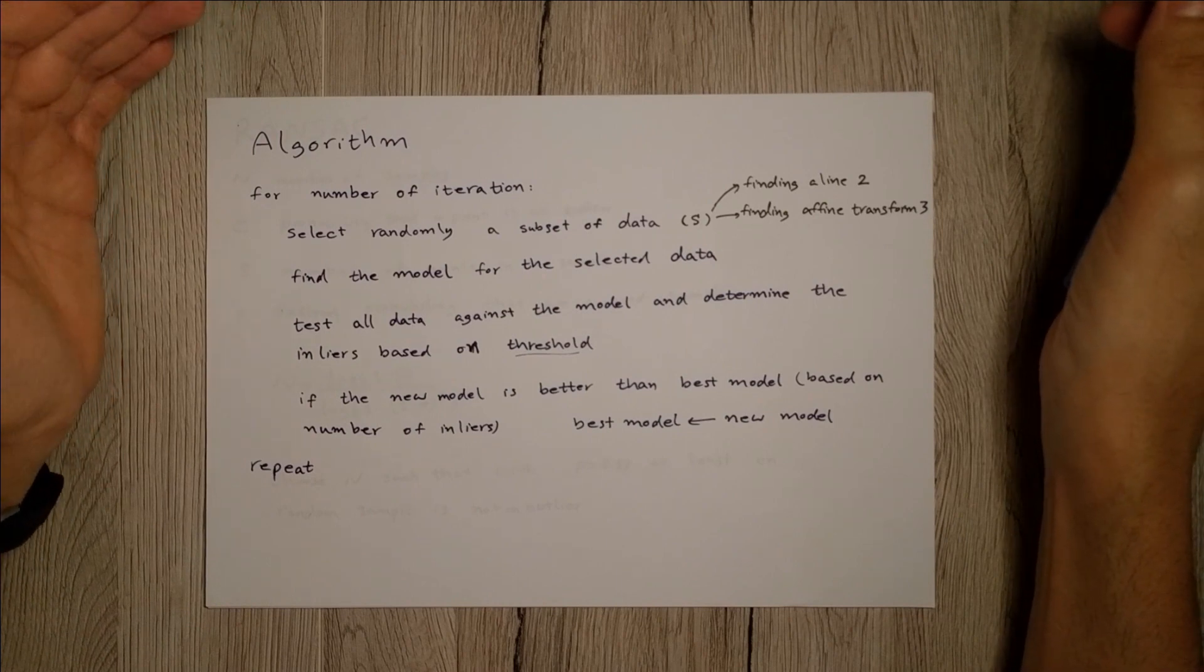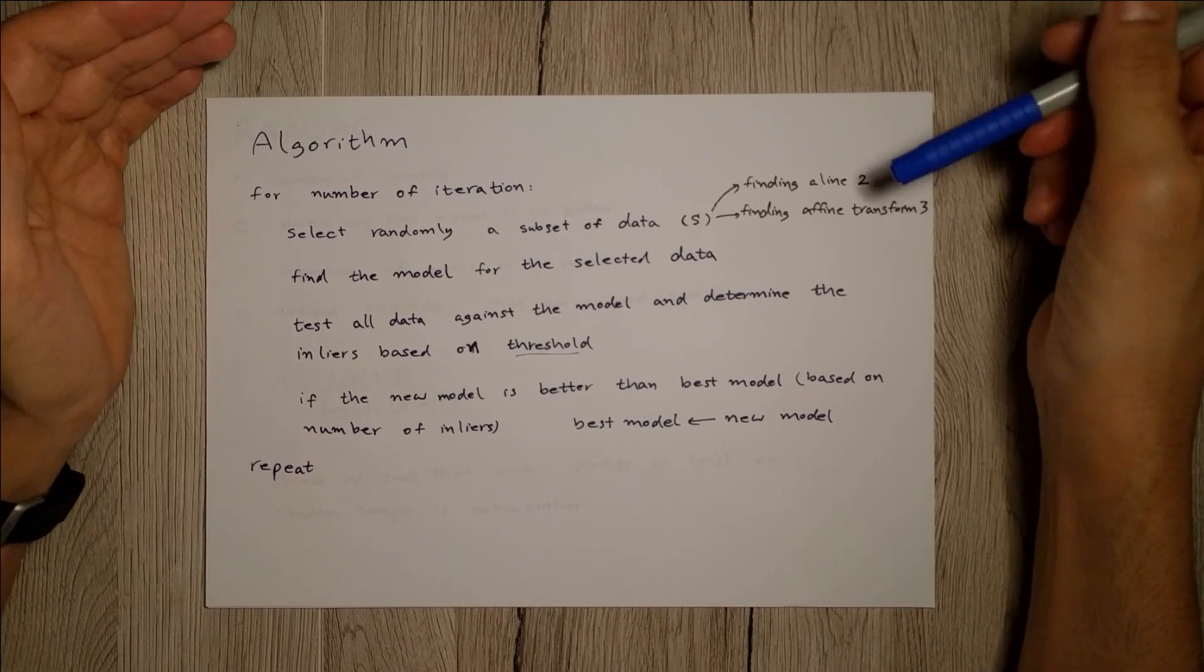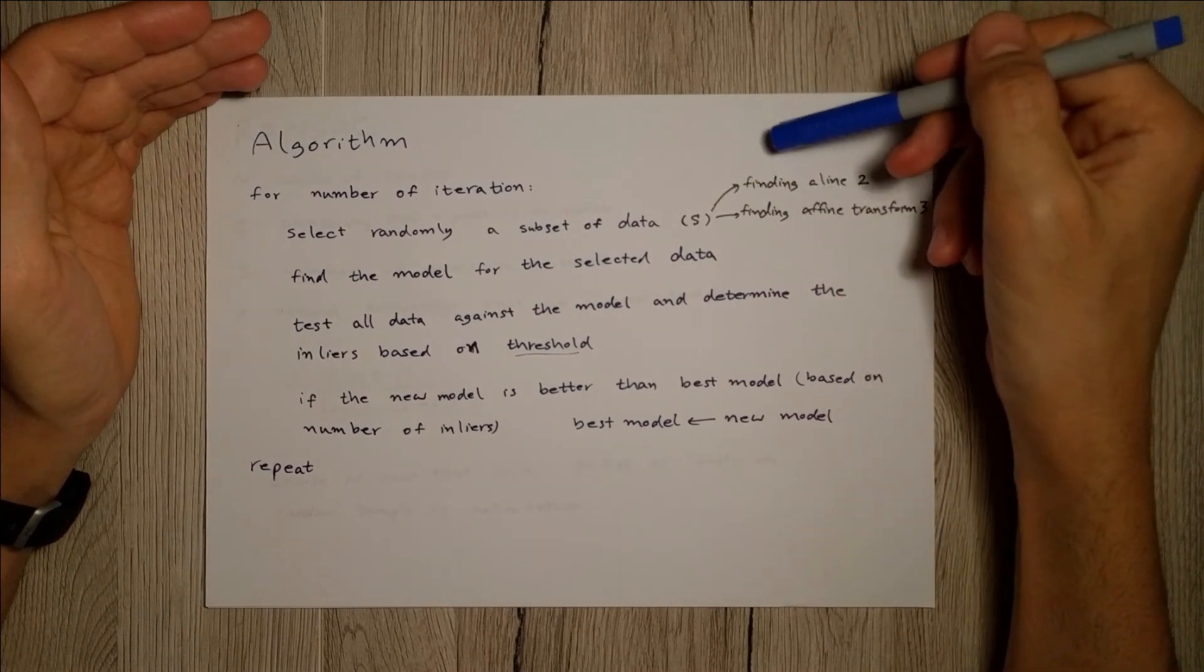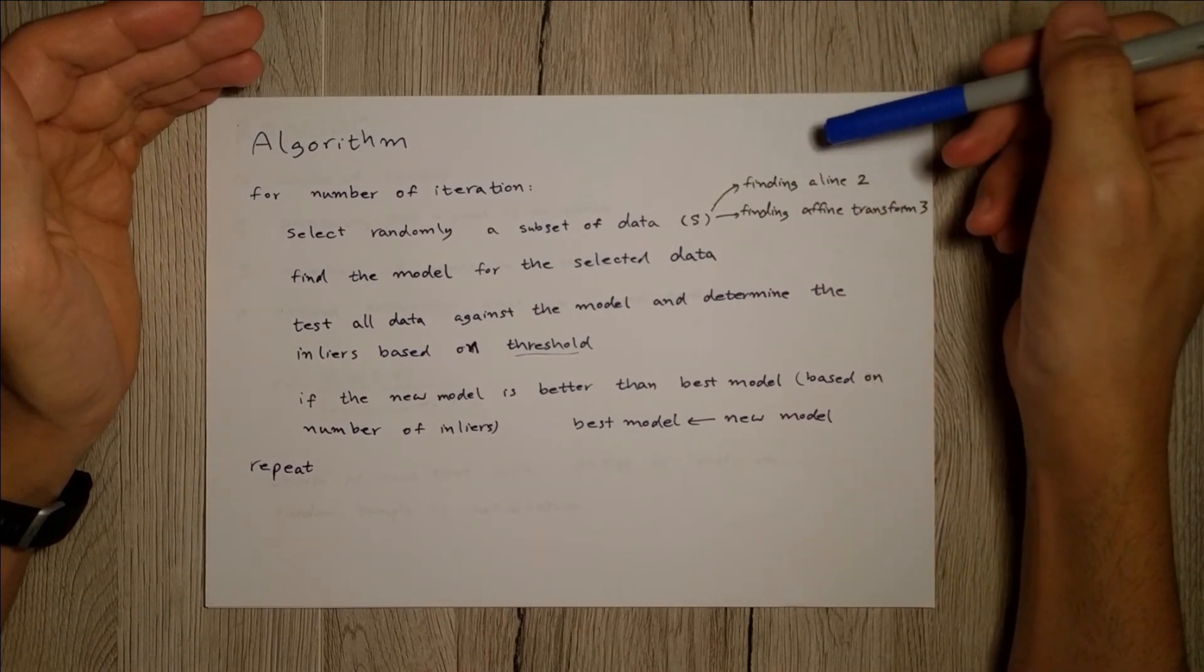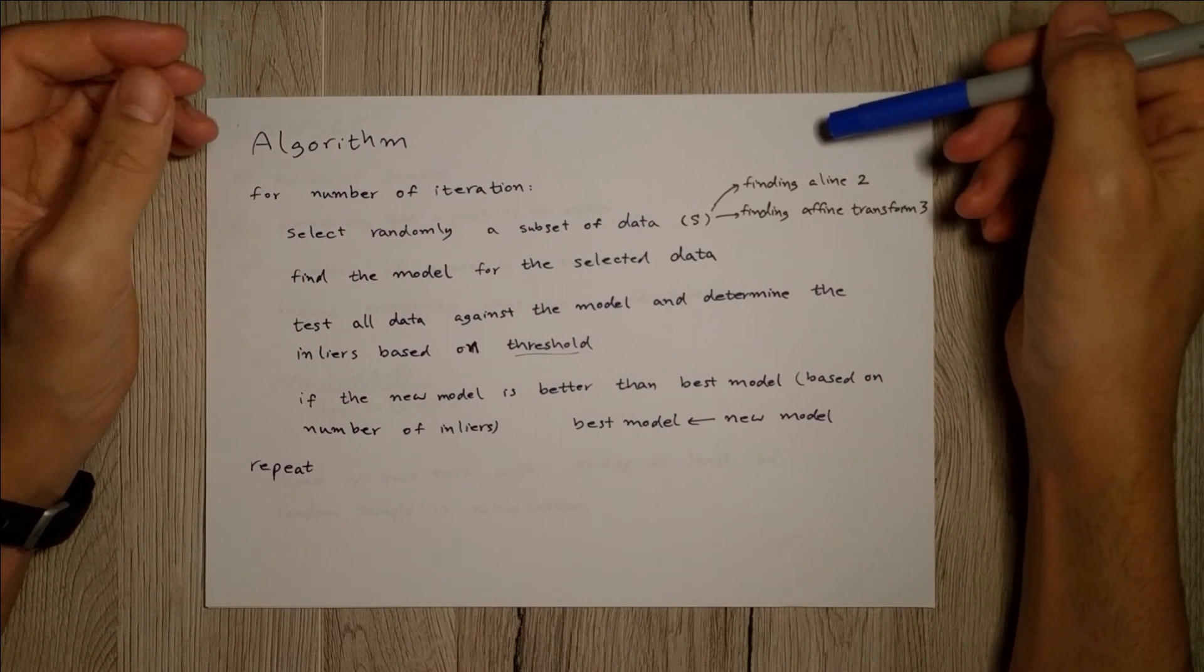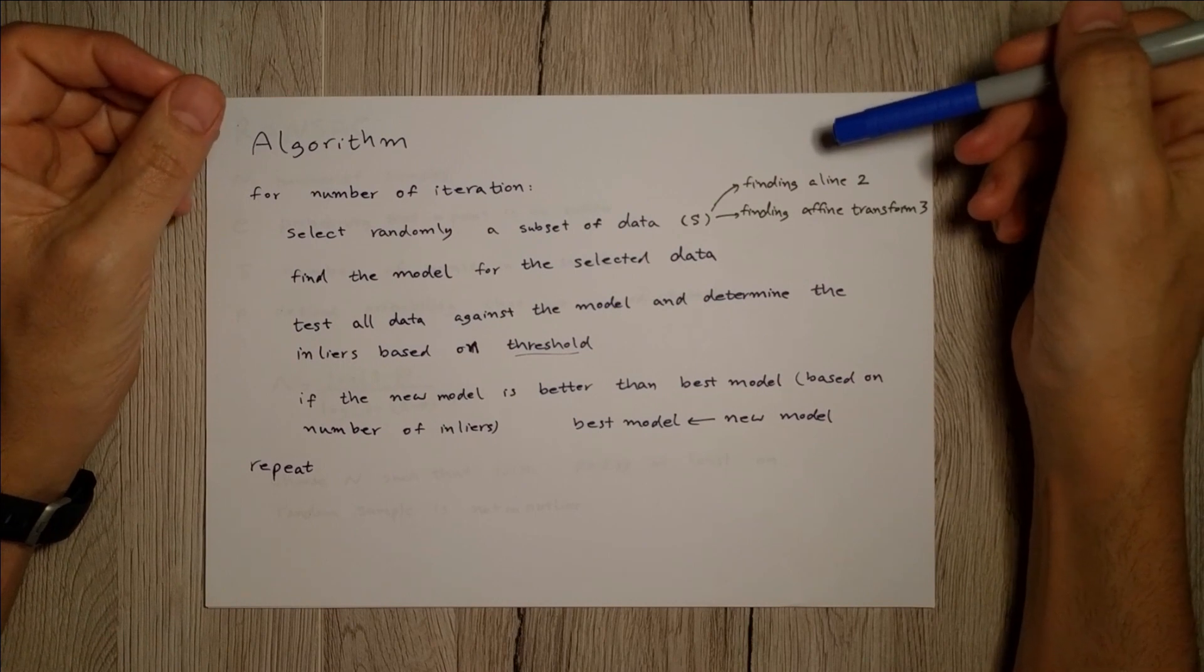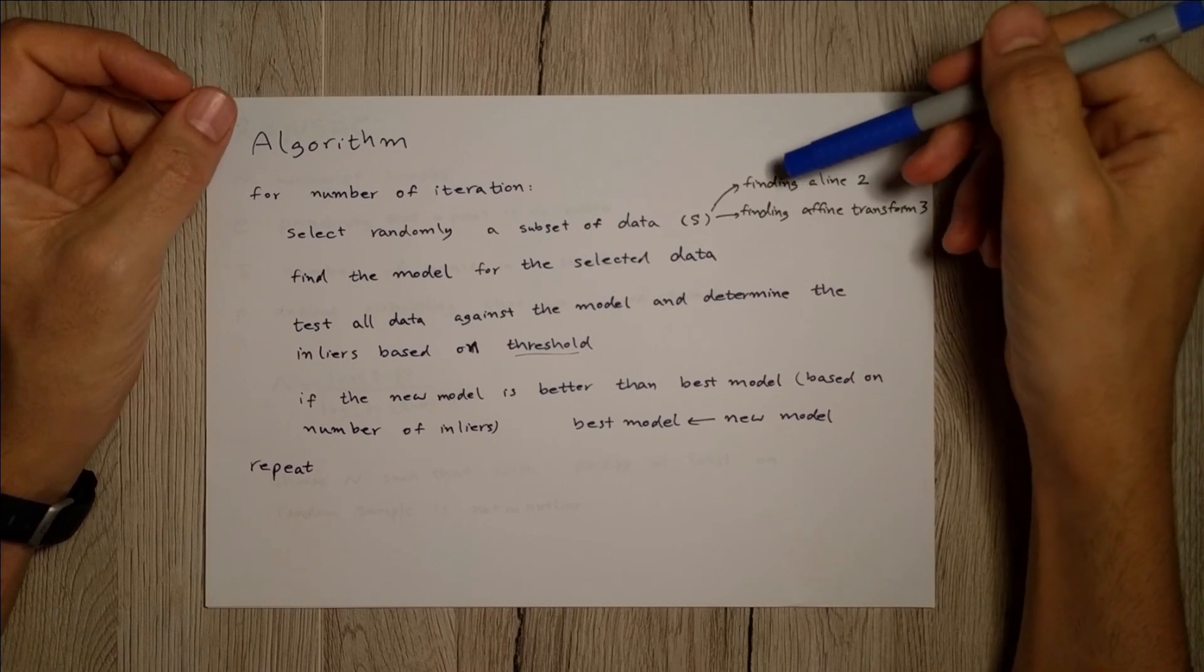For instance, if you have a line and you have a set of points, then you have to compute the distance between points and the line to see if they're less than a given threshold. Then you could say it's a fit. Or if it's an affine transform, you will apply the affine transform to your data and you get the projected data.